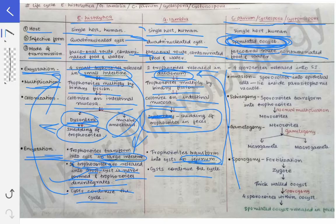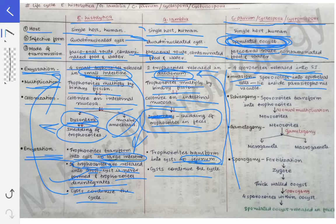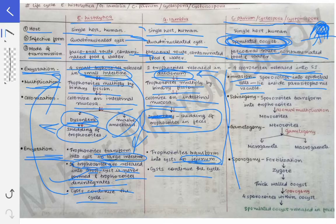Now coming to the coccidian parasites. With excystation, four sporozoids are released into the small intestine. These sporozoids invade into the epithelial cells and lie inside a parasitophorous vacuole. They enter inside the epithelial cells and form a vacuole called the parasitophorous vacuole, and they remain in that vacuole.